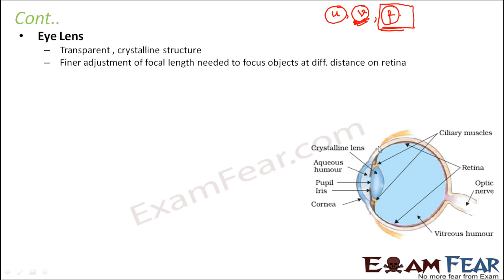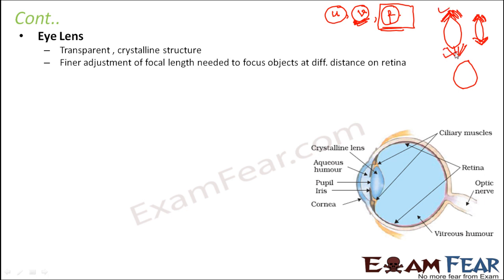The adjustment of the focal length is done by the ciliary muscles, which are present on both ends of the lens. If these muscles contract, the lens becomes more curved; if they leave it loose, the lens flattens. So the ciliary muscles on the top and bottom of the lens control the focal length and ensure that, irrespective of the distance of the object, the image is always formed on the retina.